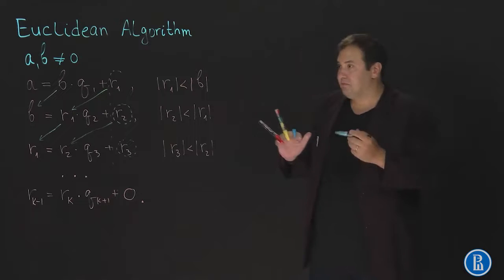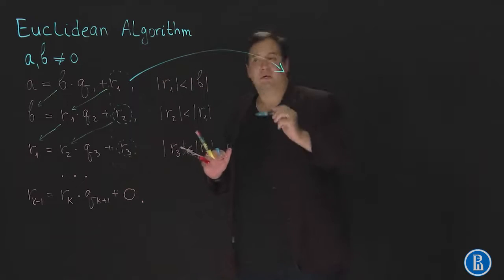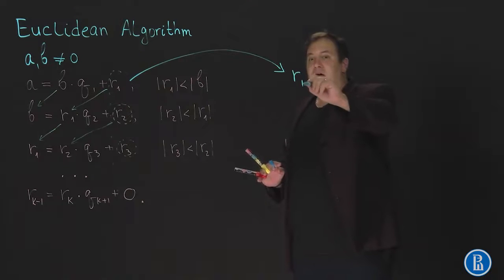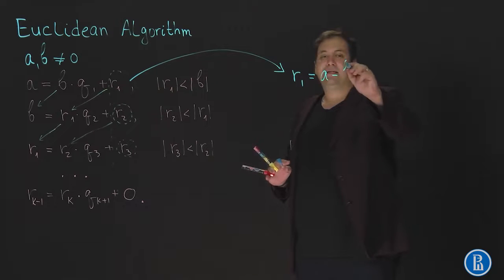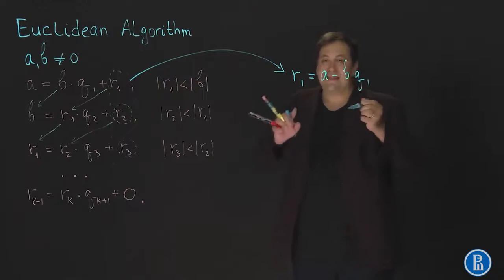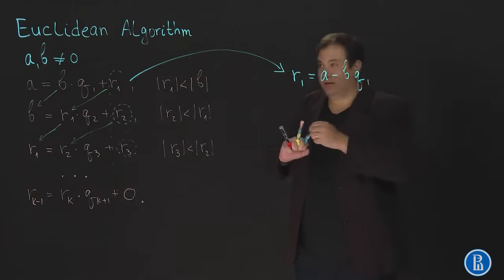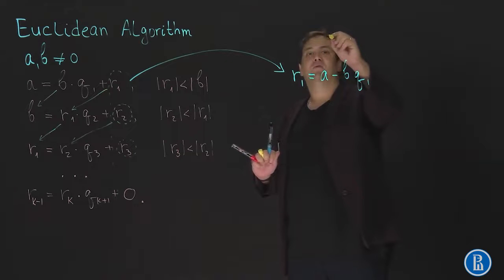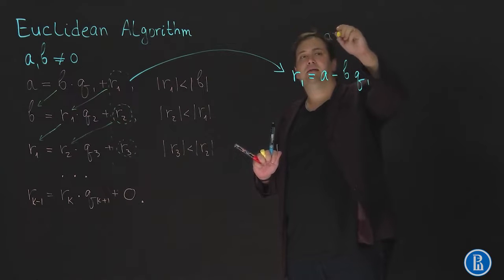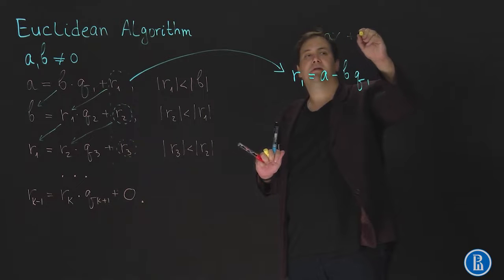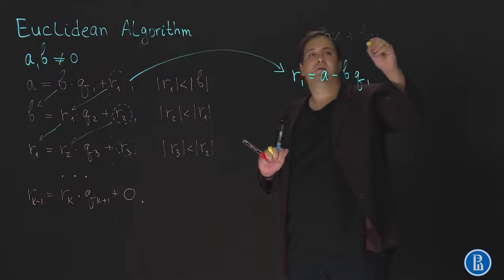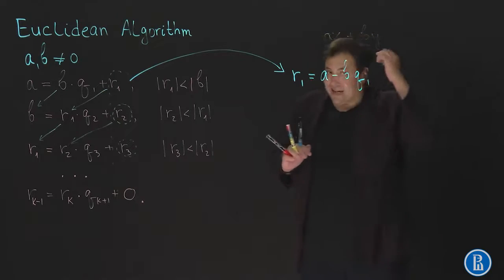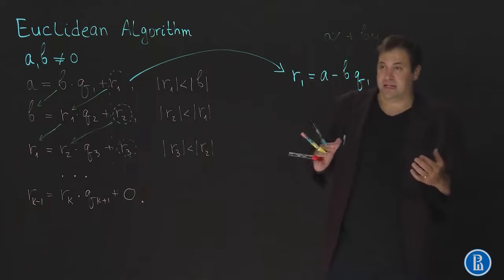Well this means that we take the first equation here, the first equality, and write that R1 is equal to A minus BQ1. This is a linear representation of R1. Let me just remind you that a linear representation is something of the form AX plus BY, where X and Y are also elements of the ring. So R1 can be linearly expressed through A and B.